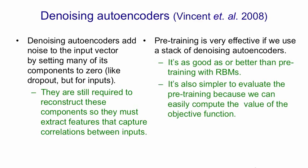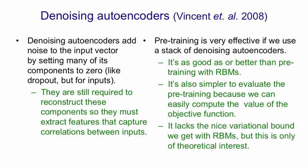It's also much simpler to evaluate the pre-training using a denoising autoencoder because we can easily compute the value of the objective function. When we pre-train a restricted Boltzmann machine with contrastive divergence, we can't compute the value of the real objective function we're trying to minimise, so we often just use the squared reconstruction error, which is not actually what's being minimised. In a denoising autoencoder, we can print out the value of the thing we're trying to minimise, and that's very helpful. One disadvantage of the denoising autoencoder is that it lacks the nice variational bound we get with restricted Boltzmann machines, but that's only of theoretical interest because it only applies if the restricted Boltzmann machine is trained with maximum likelihood.